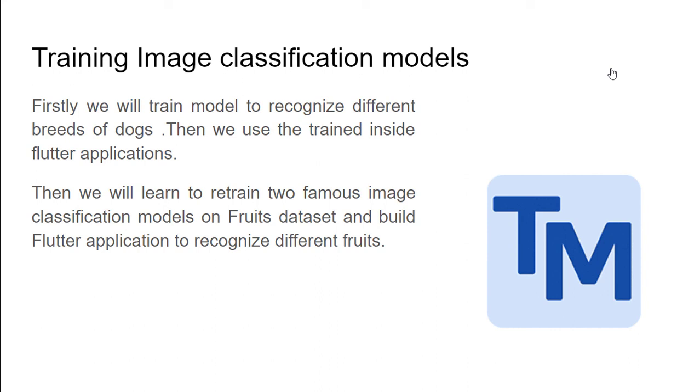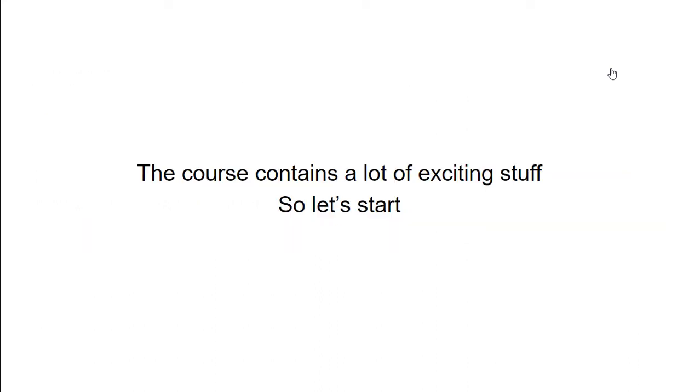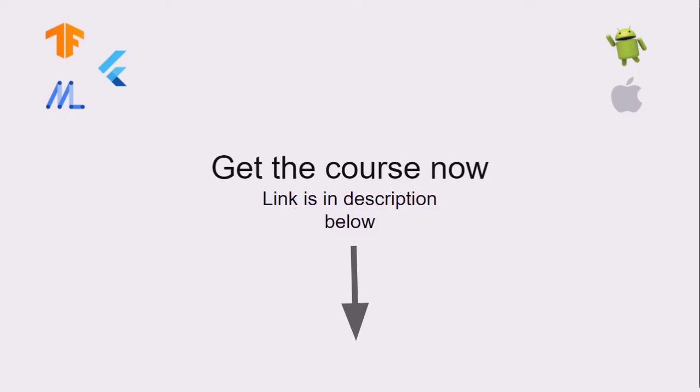First, we will train a model to recognize different breeds of dogs, then use this trained model inside a Flutter application. After that, we will retrain two famous image classification models on a fruits dataset and build a Flutter application to recognize different fruits. As the course contains a lot of exciting stuff, let's start!